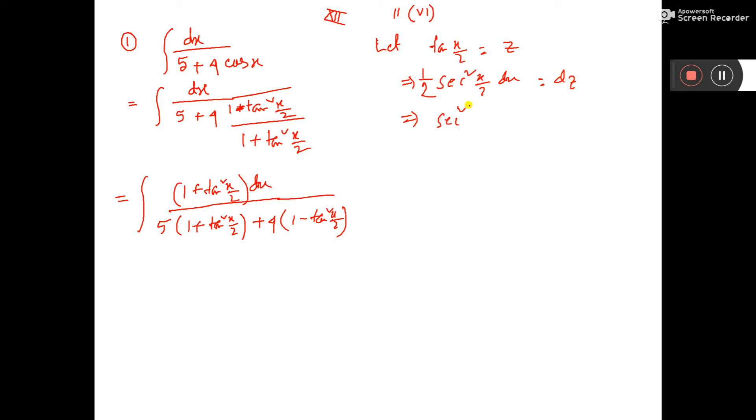So sec square x by 2 dx is equal to 2 dz. So here you can write 2 dz by 5 into 1 plus z square, 1 plus z square, plus 4 into 1 minus z square.